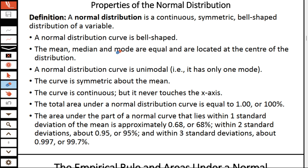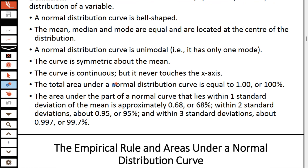The fourth property is that the curve is symmetric about the mean. The fifth property is that the curve is continuous, but it never touches the x-axis. When you draw a typical normal distribution curve, it remains continuous but will never touch our x-axis. And the total area under the normal distribution curve is equal to one — or 100%. For a probability distribution, when you sum all the probabilities you get one, which is the area under the curve. When you integrate the function over its limits, it gives you one.